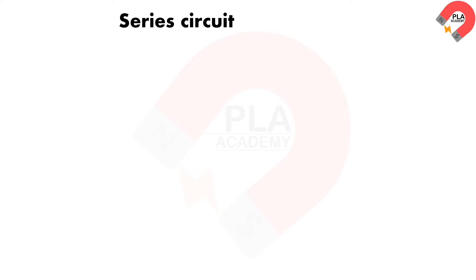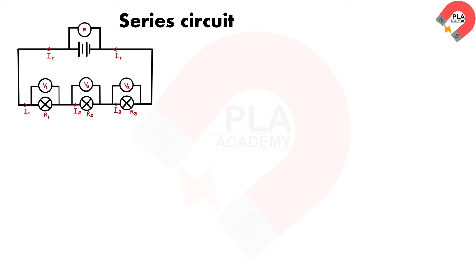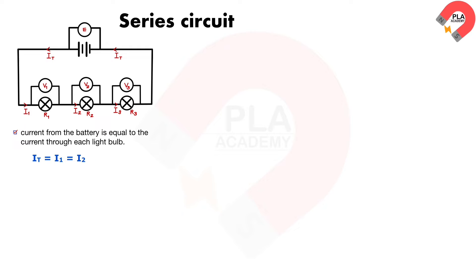In a series circuit, the current at every point is the same, and the sum of potential difference across each component is equal to the electromotive force of the battery. The diagram shows three light bulbs connected in series with a battery. The current from the battery I_T is equal to the current through each light bulb: I_1 equals I_2 equals I_3.